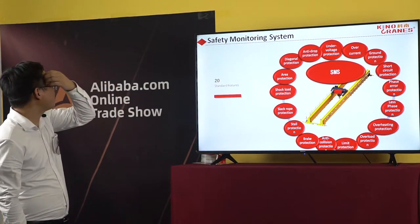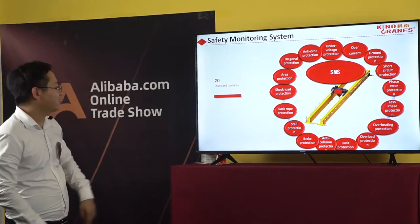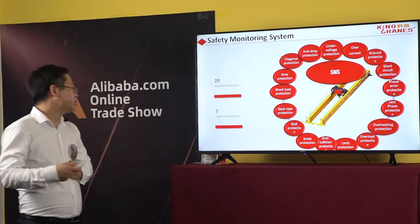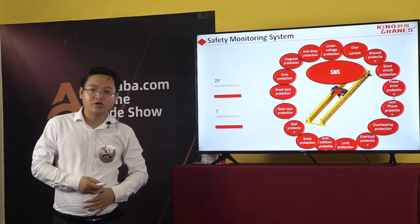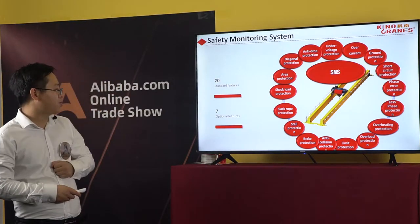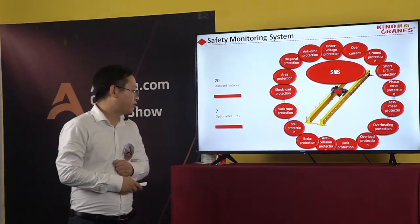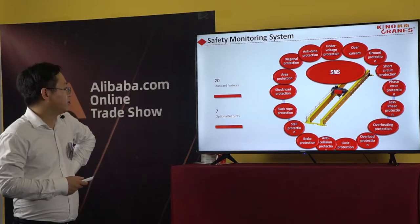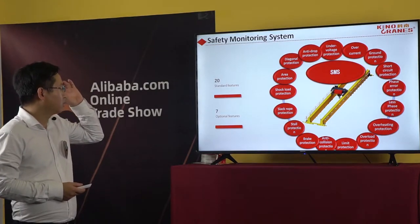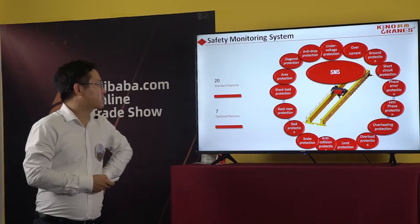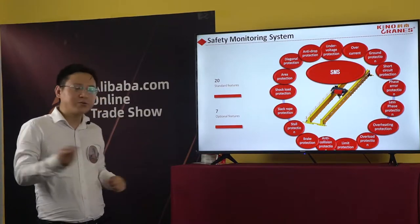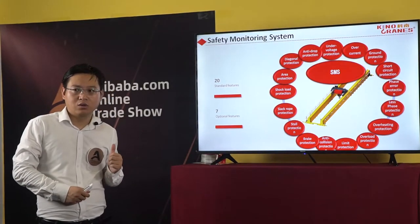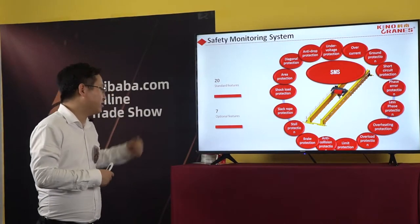For the City Monitor Device, the standard features include only 20 pieces. The additional optional features stand like Slat-root Protection, Stall Protection, Shuttle Protection, and Delgado Protection. These are optional features — if the user needs this function, it is available.